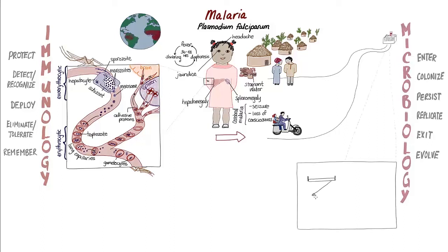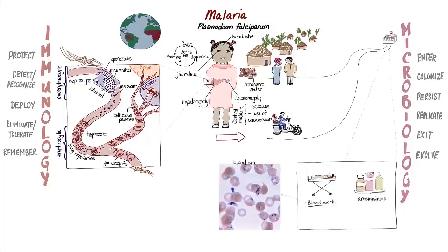Upon arrival at the hospital in Ibanda, Farida's blood was immediately drawn for several lab tests and she was started on an IV anti-malarial medication called artesunate, part of the artemisinin group of drugs that treat malaria. This drug had recently replaced IV quinine in accordance with World Health Organization recommendations. Farida's blood smear showed ring forms and gametocytes confirming the diagnosis of falciparum malaria. Her blood tests also revealed a low platelet count, elevated levels of bilirubin consistent with the finding of jaundice, hypoglycemia, and a normal white blood cell count, all confirming the diagnosis.